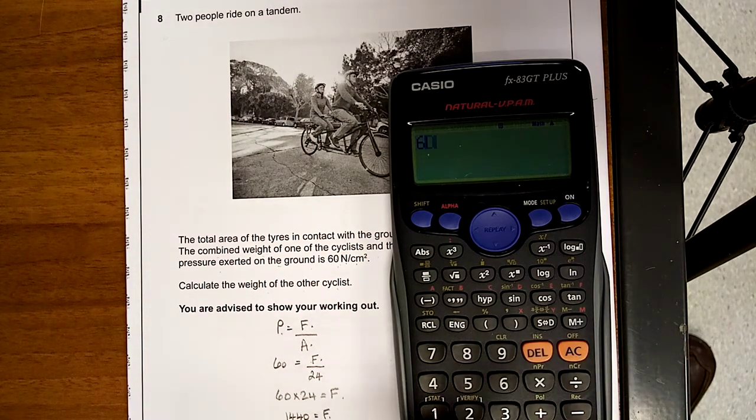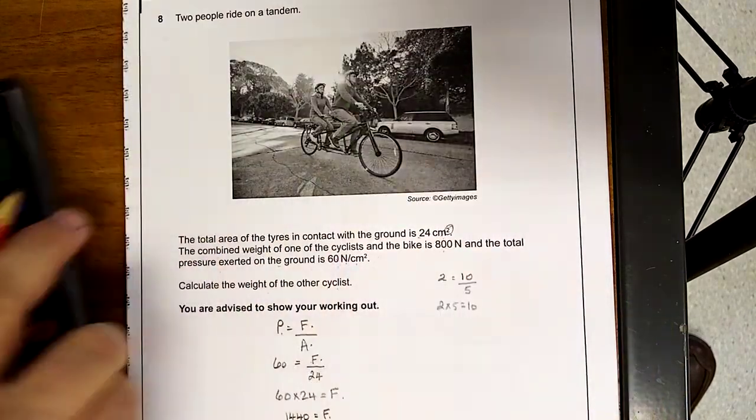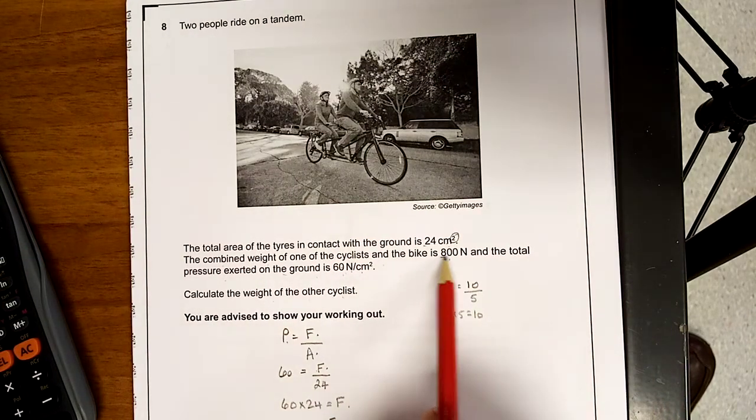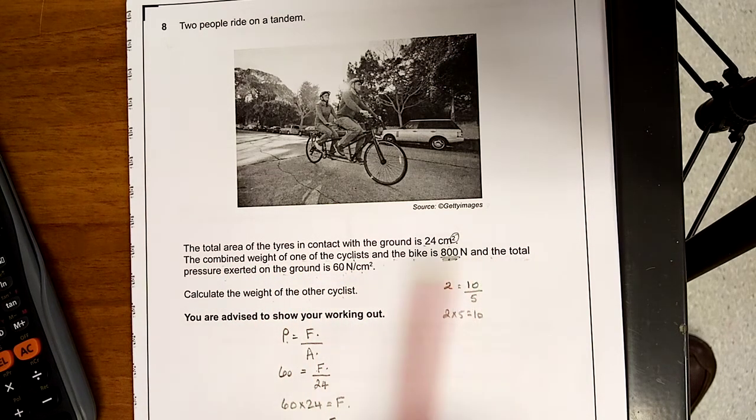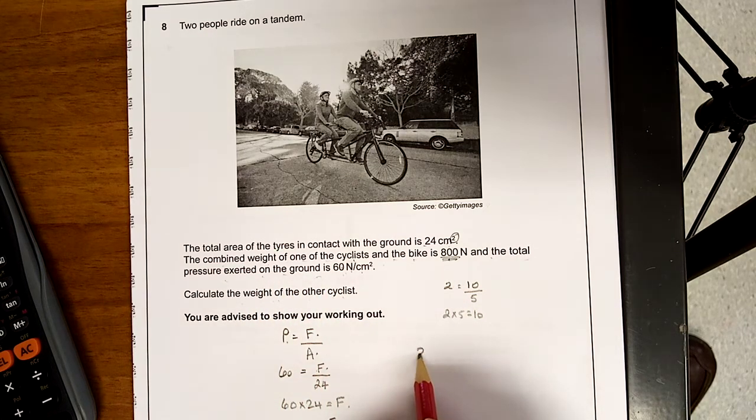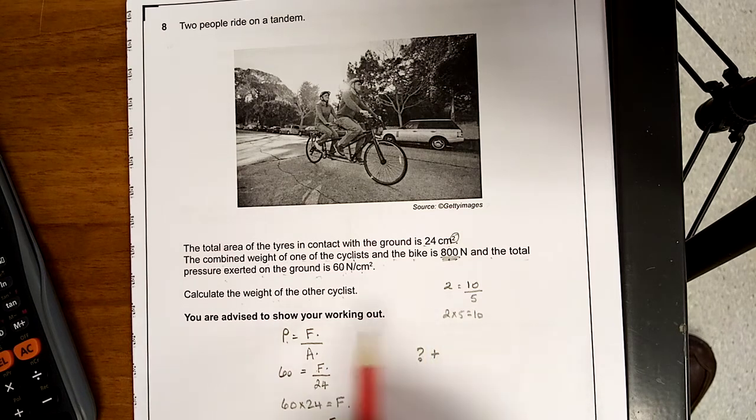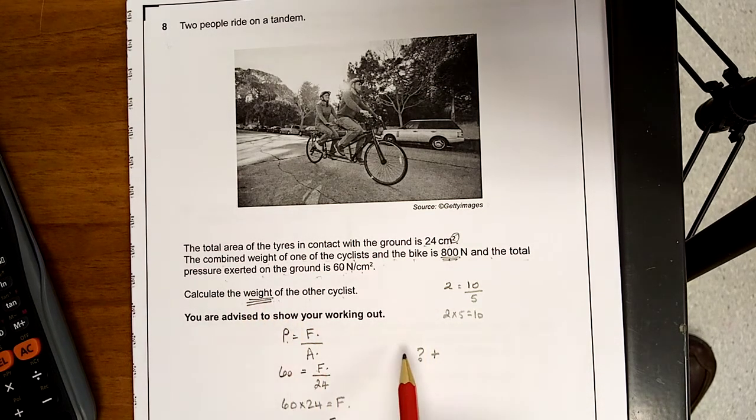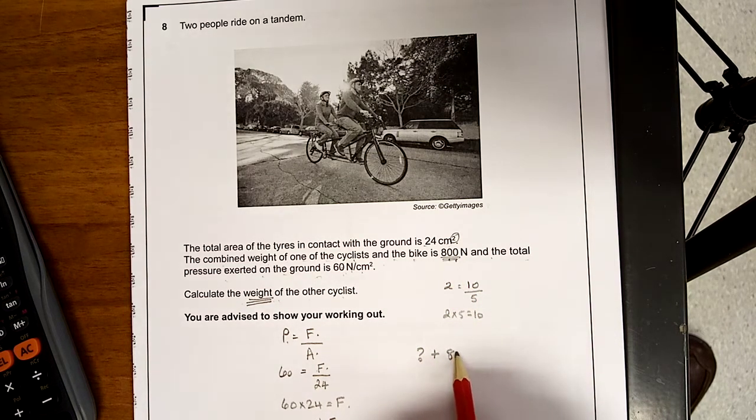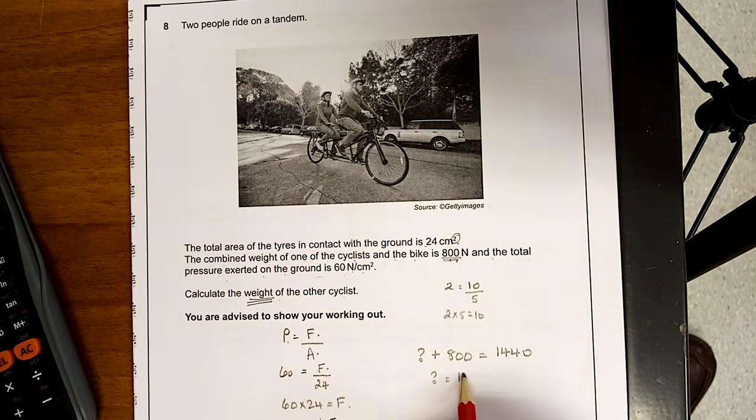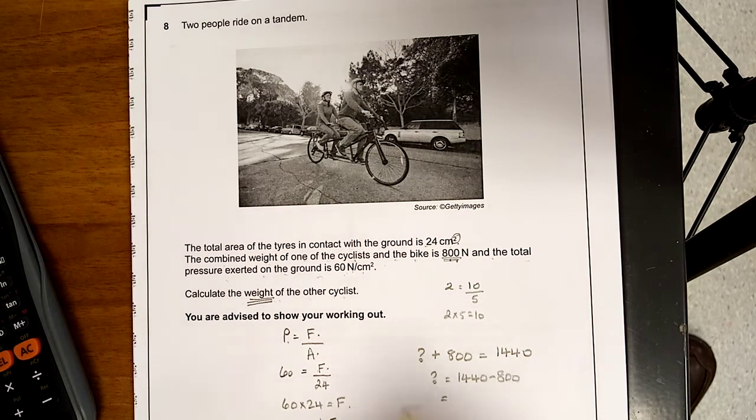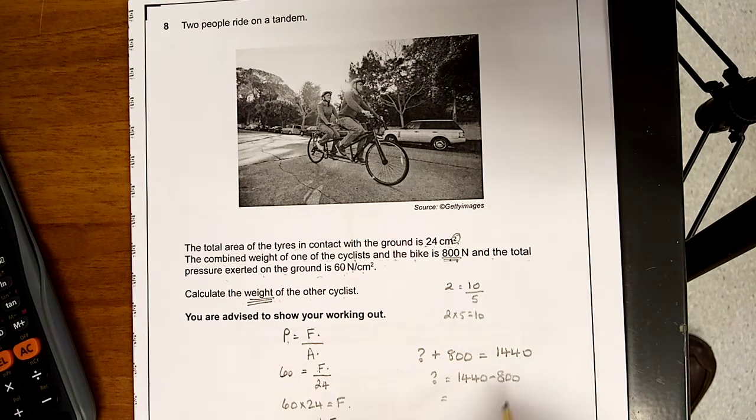So, add again. 60 times 24, 1440. Now, that's the force. 800 newtons. So, the combined weight of one of the cyclists and the bike is 800. And the total pressure, so, the weight of the other cyclist. And the weight. See the way they say weight here. That's a force. And that's going to be in newtons. So, our daily value plus 800 newtons. So, there's no trick sitting there for us. It's equal to 1440. Sum number is equal to 1440, take away 800. 640. So, the weight of the other person is 640 newtons.